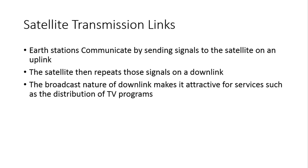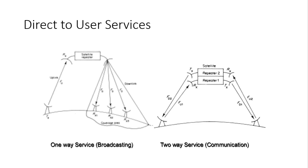Satellite transmission link: Earth stations communicate by sending signals to the satellite on an uplink, and the satellite then repeats those signals on a downlink. The broadcast nature of the downlink makes it attractive for services such as distribution of TV programs. One-way services are provided from antennas to a satellite; two-way services are provided from antenna to satellite and satellite back to antenna. One-way services are used for broadcasting and two-way services are used for communication.